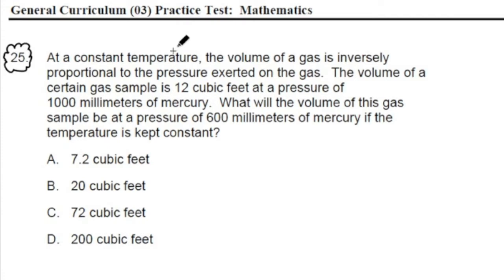So let's start. First, we read it over to understand. At a constant temperature, the volume of a gas is inversely proportional to the pressure exerted on the gas. The volume of a certain gas sample is 12 cubic feet at a pressure of 1,000 millimeters of mercury. What will the volume of this gas sample be at a pressure of 600 millimeters of mercury if the temperature is kept constant?